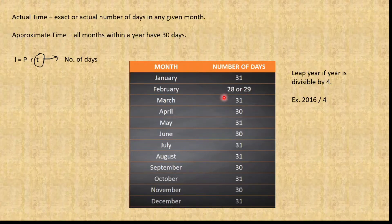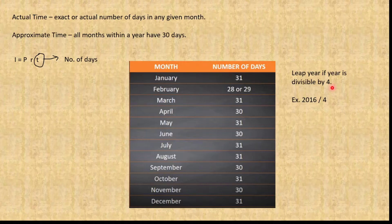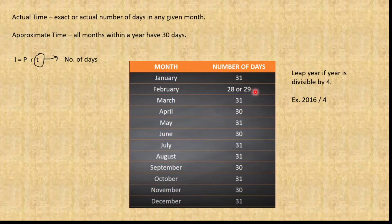To determine if a year is a leap year, check if it is divisible by 4. For example, 2016 — divide it by 4 and since it is divisible by 4, we use 29 days for February. If it is not divisible by 4, we use 28 days.